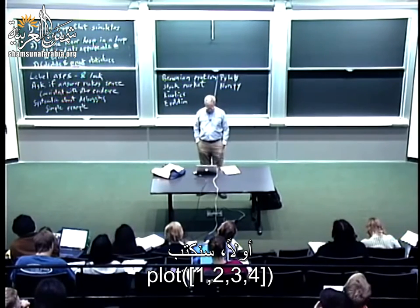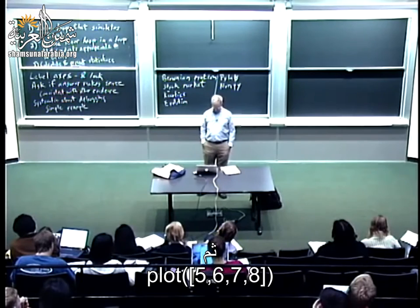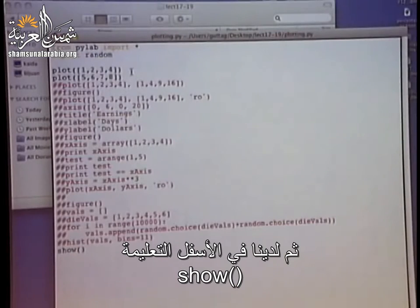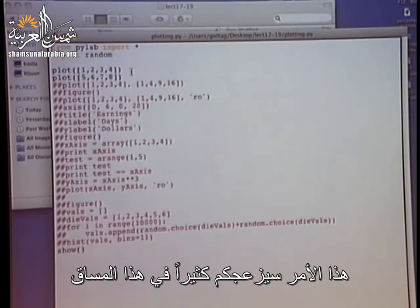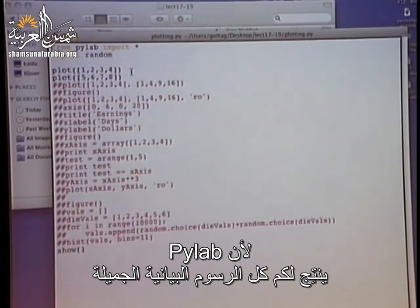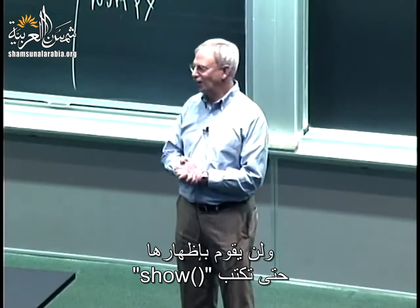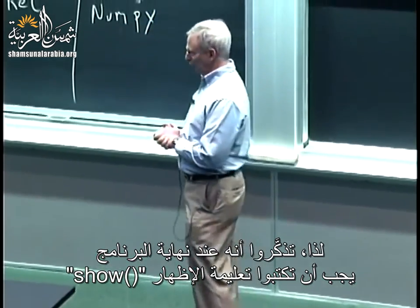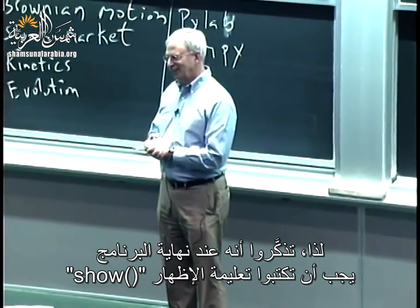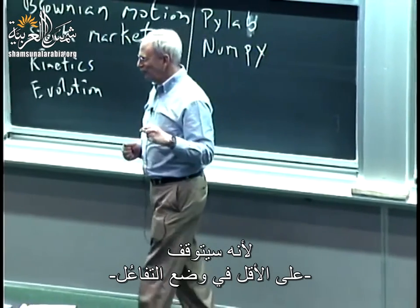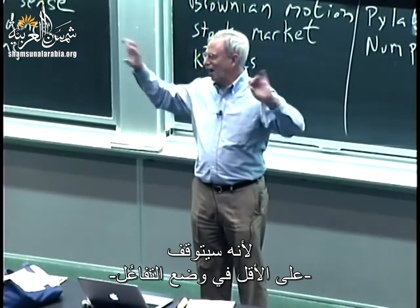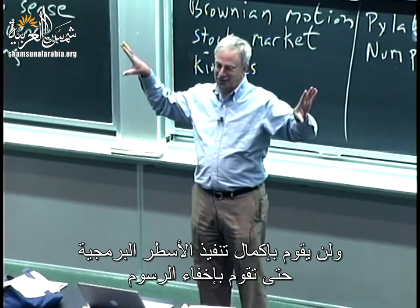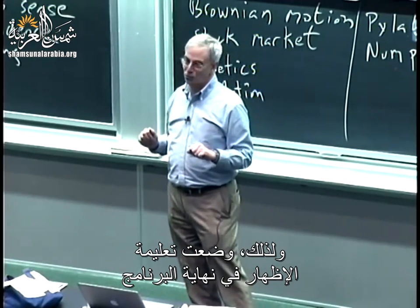We say 'from pylab import star' so I don't have to type pylab.plot every time. First thing, we're going to plot [1,2,3,4] and then [1,2,3] and [5,6,7,8]. At the very bottom, you'll see the line 'show'. That's going to annoy you throughout the semester. PyLab produces all these beautiful plots and does not display them until you type show. So remember, at the end of every program, the last thing you should execute should be show. If you execute it in the middle in interactive mode, it just stops and waits for you to close the plots before executing the next line.